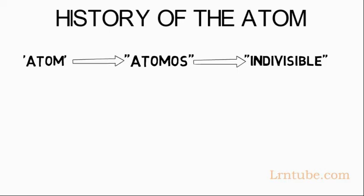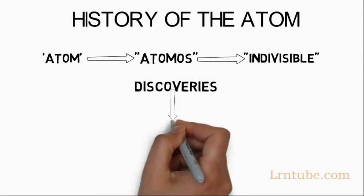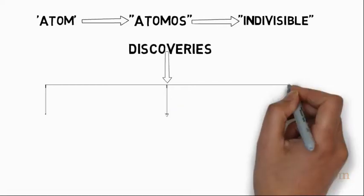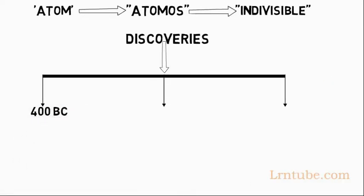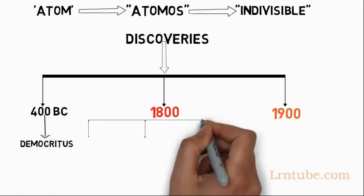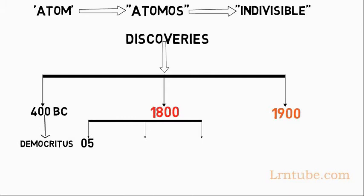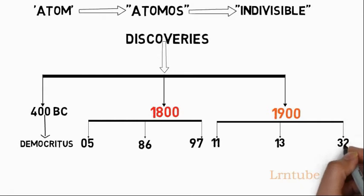But atoms can in fact be split or divided. The discovery of atoms can be split into three major eras: 400 BC, the 1800s, and the 1900s. Under the 1800s we have 1805, 1886, and 1897. Under the 1900s we have 1911, 1913, and 1932.